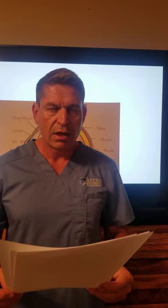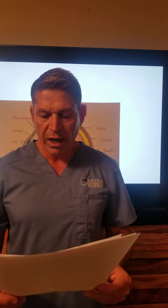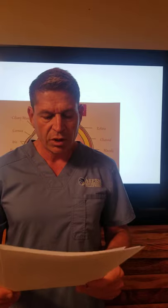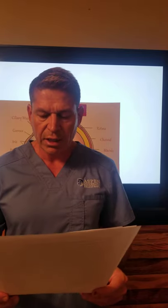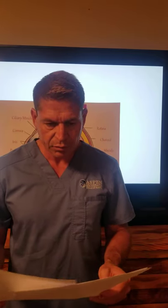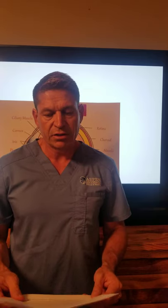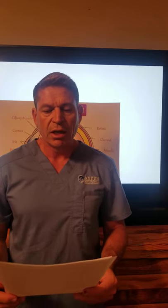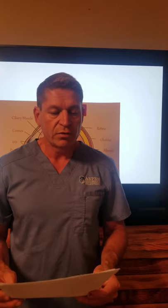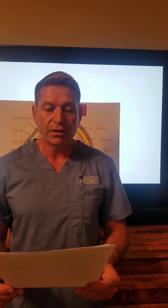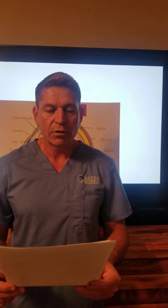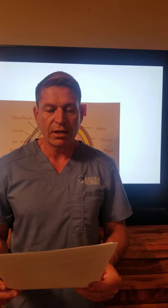Glaucoma is another disease that happens as you age. It produces damage to the optic nerve by increased intraocular pressure, and it leads to visual loss and blindness. This is one of the leading causes of blindness in people 60 years and older. Clinical manifestations include patchy blind spots in your side, peripheral, or central vision — frequently in both eyes — tunnel vision in advanced stages, and severe headaches, eye pain, blurry vision, halos around light, and eye redness.